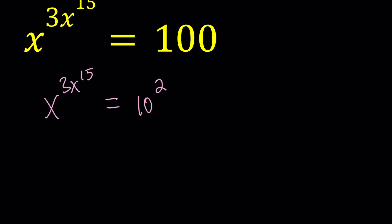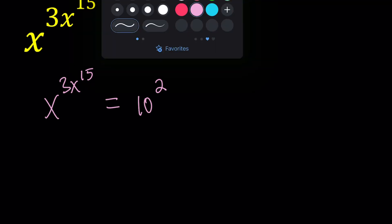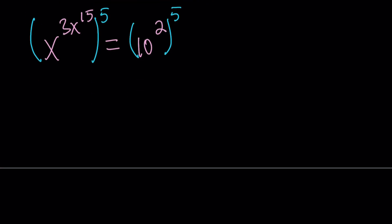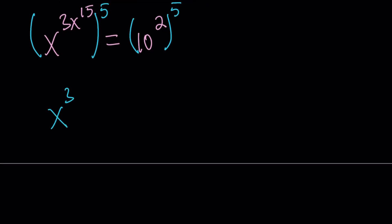So I'm going to do the following. I'm going to raise both sides to the power 5. And that is going to do the trick. Let's see how this goes. This is x to the power 3x to the power 15 times 5 equals 10 to the power 2 times 5 which is 10. And now 3 and 5 are multiplied. So this gives us x to the power 15x to the 15 equals 10 to the 10. Does that ring a bell?